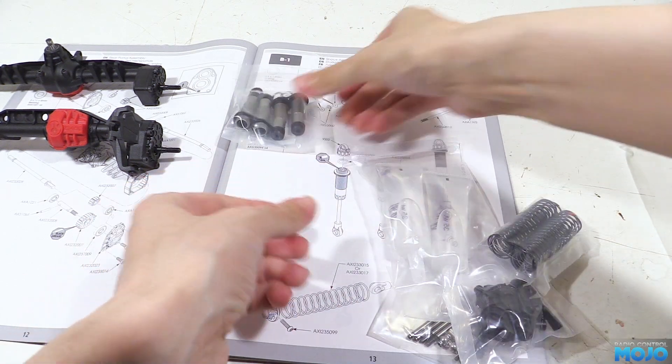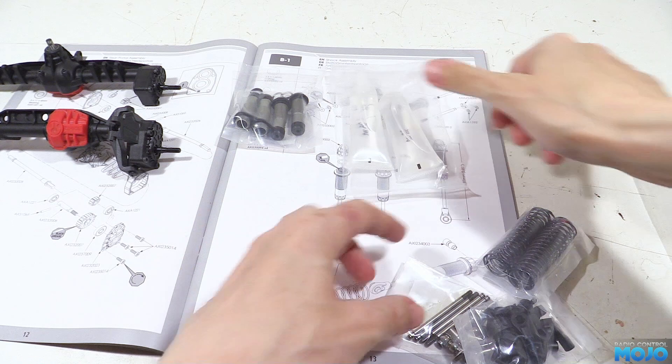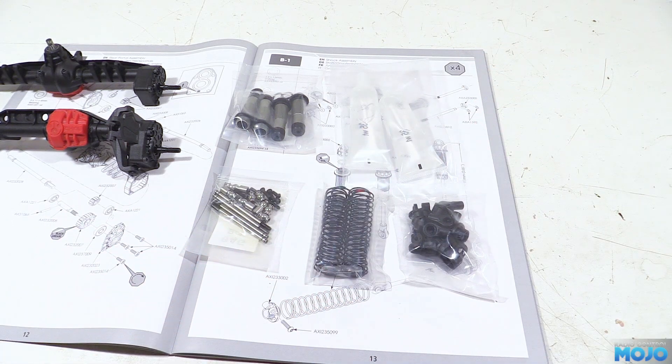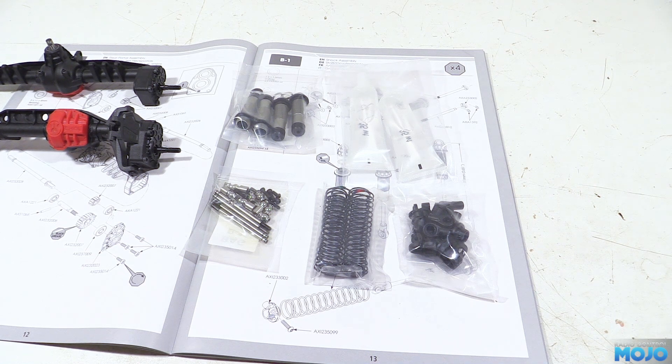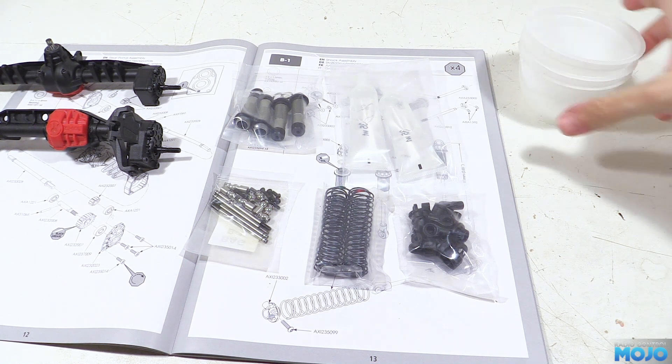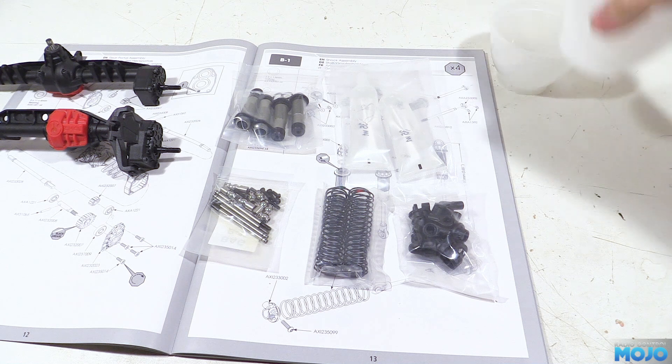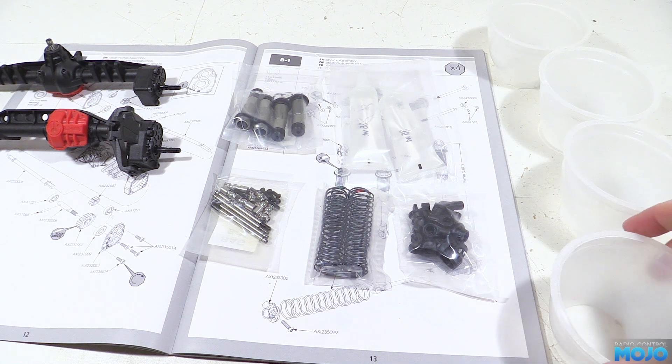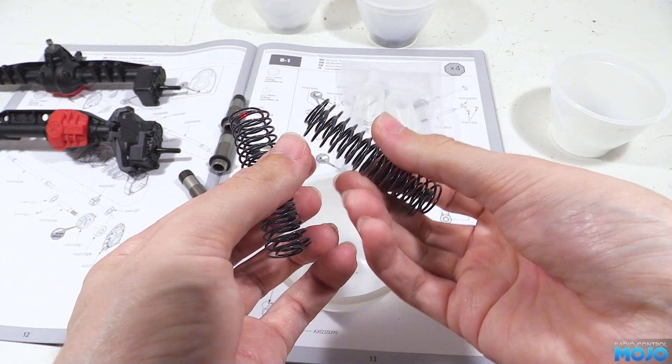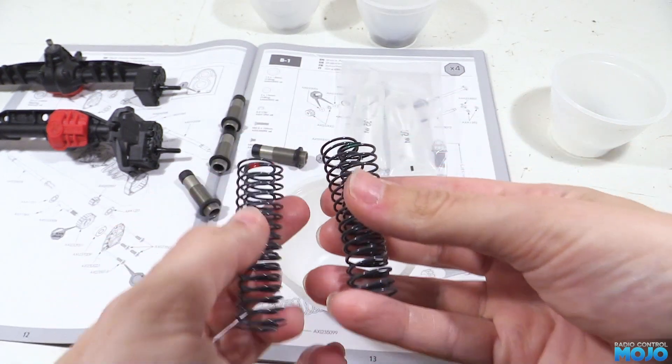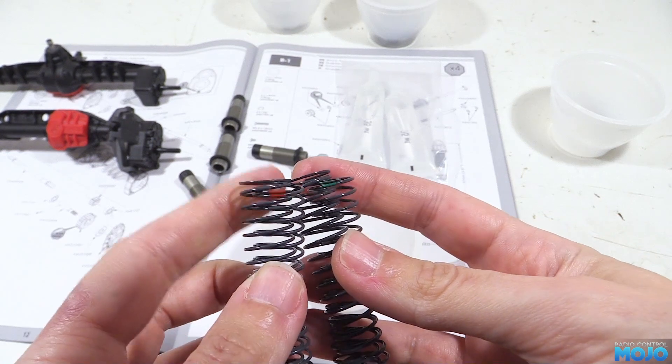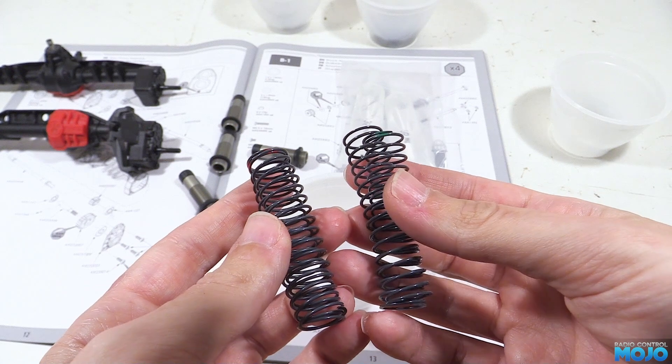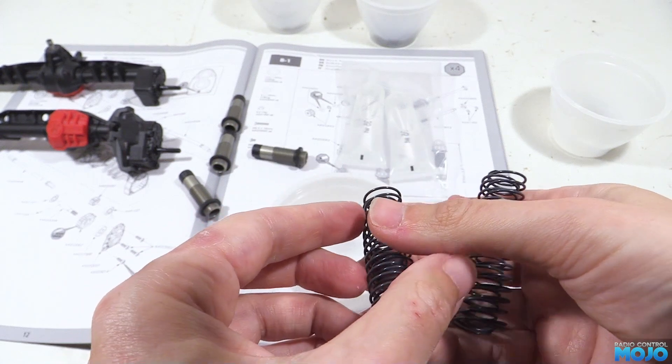In bag B we get five sub bags: one with the damper bodies, another with the shafts and the small bits, one with the springs, some tubes of oil, and the last with all the plastic parts. As usual we'll separate them out into different pots so we can easily find what we want as we go. The springs have a red and a green dot at one end, but for the time being these don't really matter. But when we fit them to the chassis we'll need to put them in the right places. That's a long way off yet though.